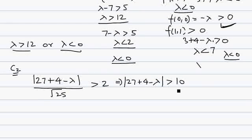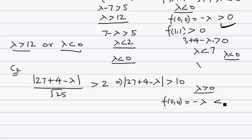First, make lambda greater than zero. The sign of the origin is minus lambda, so it is less than zero.